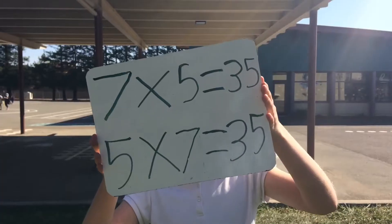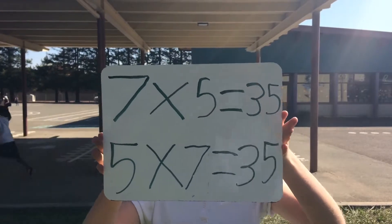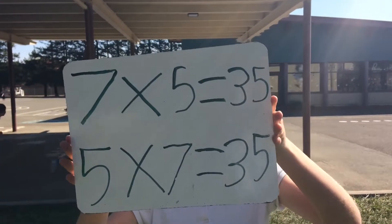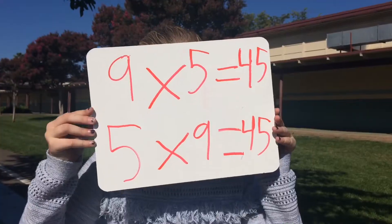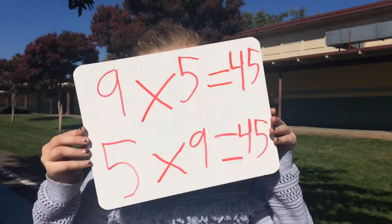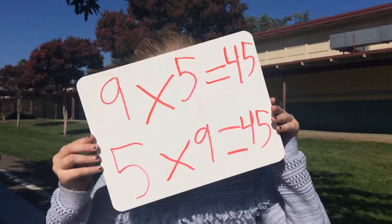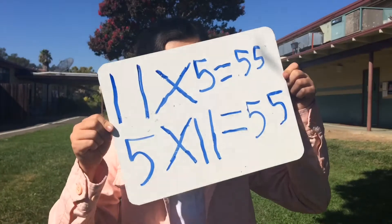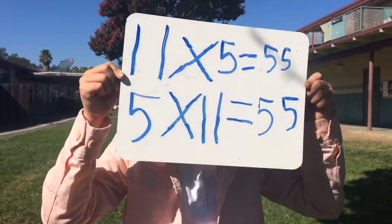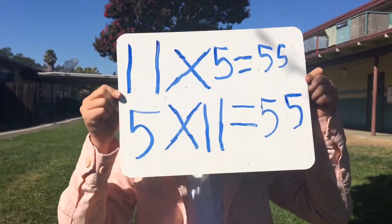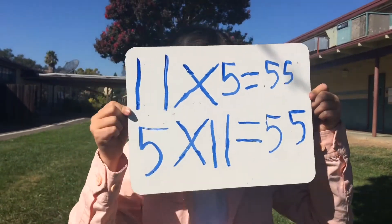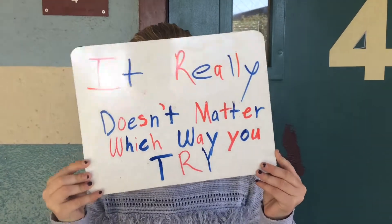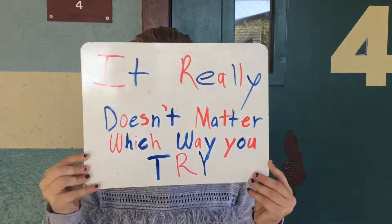7 times 5 is 35, 5 times 7 is 35, 9 times 5 is 45, 5 times 9 is 45, 11 times 5 is 55, 5 times 11 is 55. It really doesn't matter which way you try.